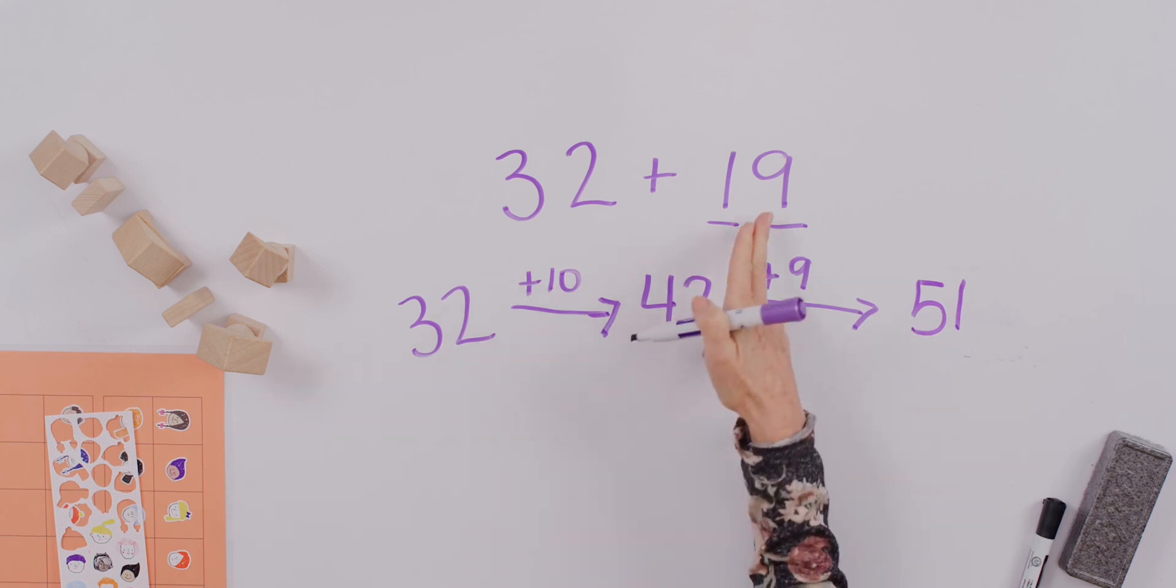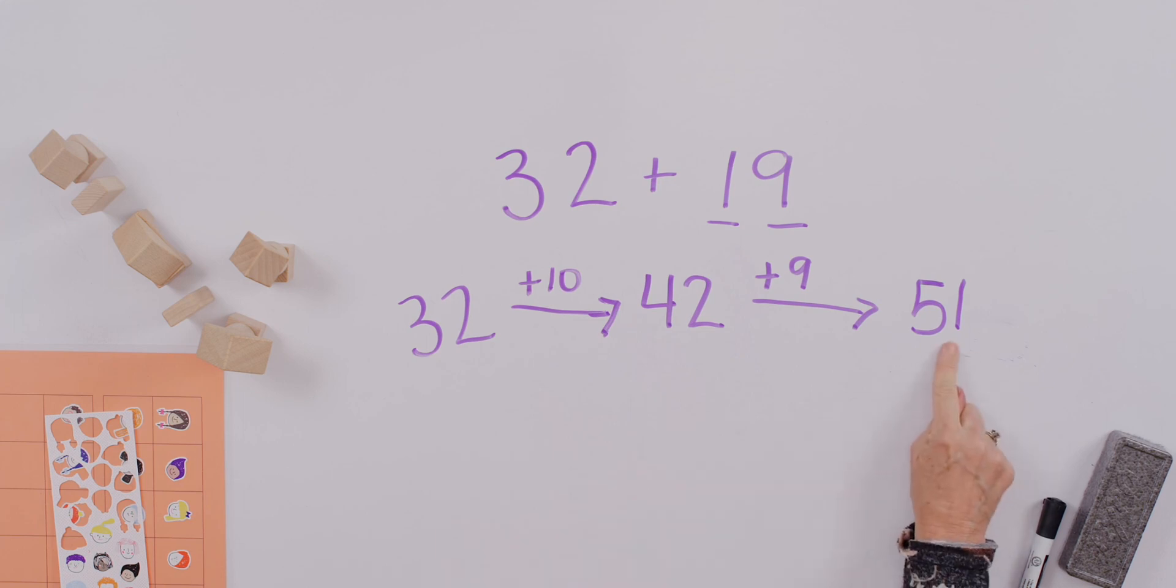We can also think about the fact that nine plus two equals eleven. And that can just help us see that we should have our one in our ones column.